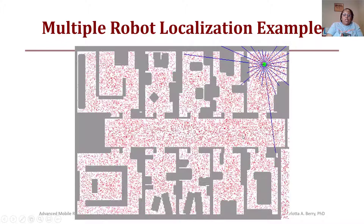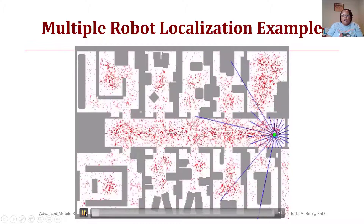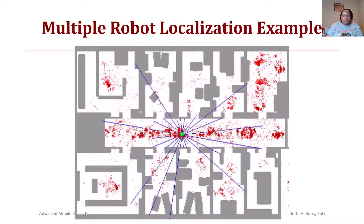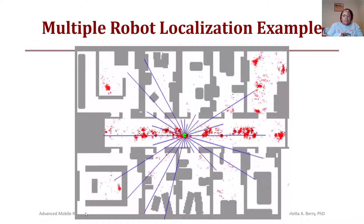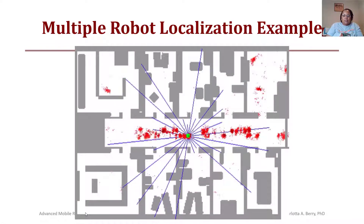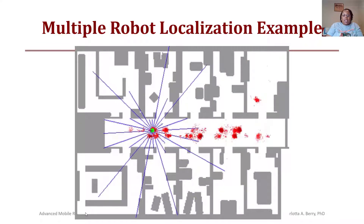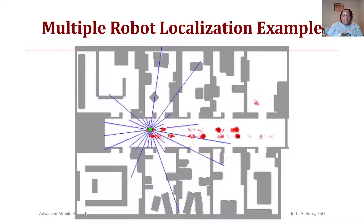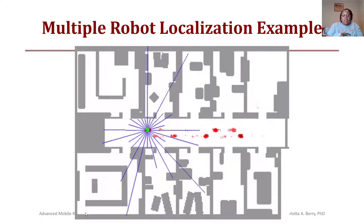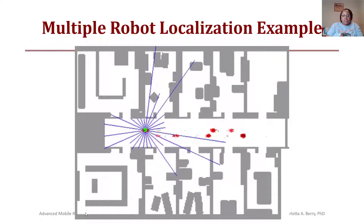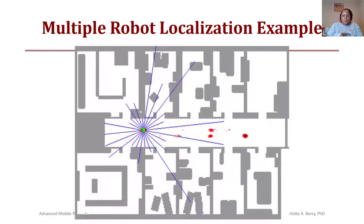Here is another mobile robot localization example based upon a figure shown before, where the robot is moving, enters a local maxima, then enters a room and completely localizes.